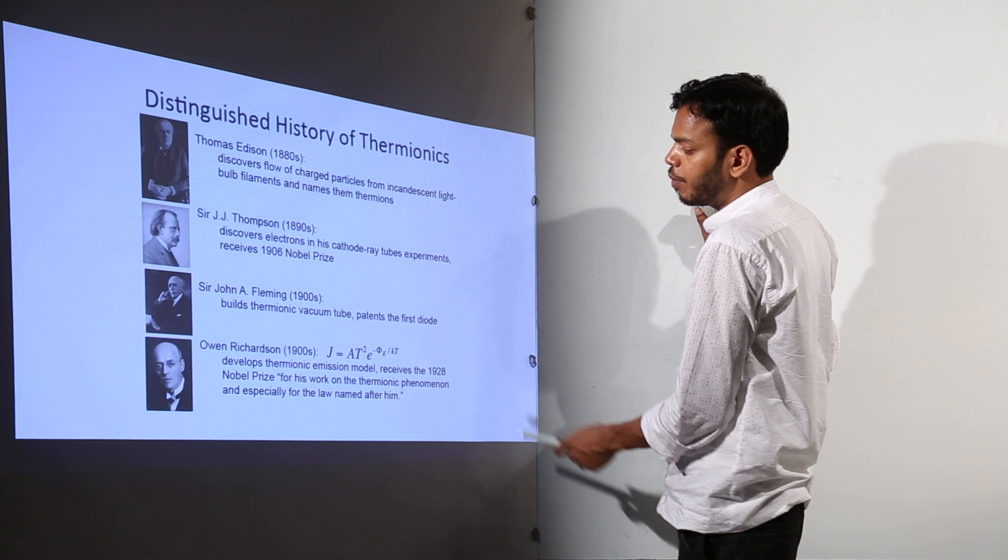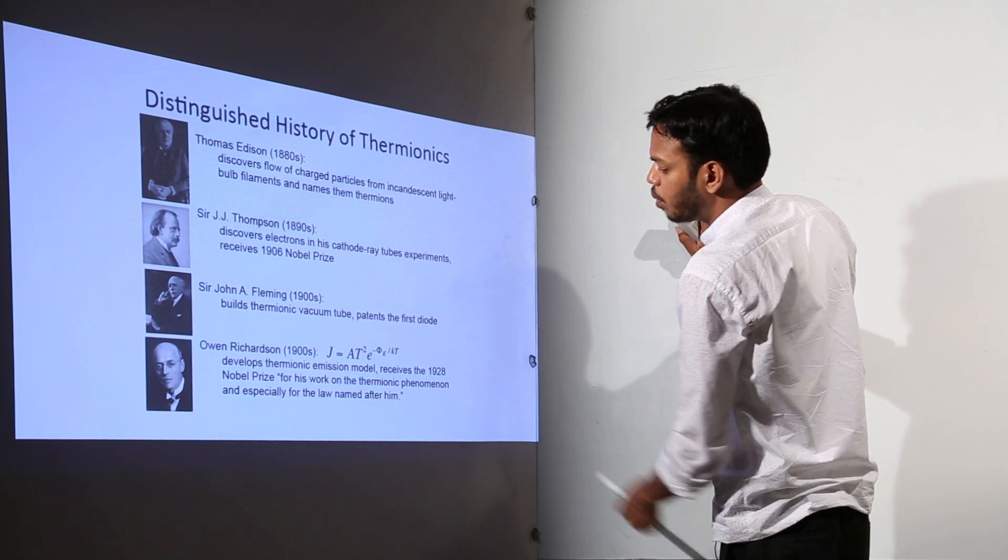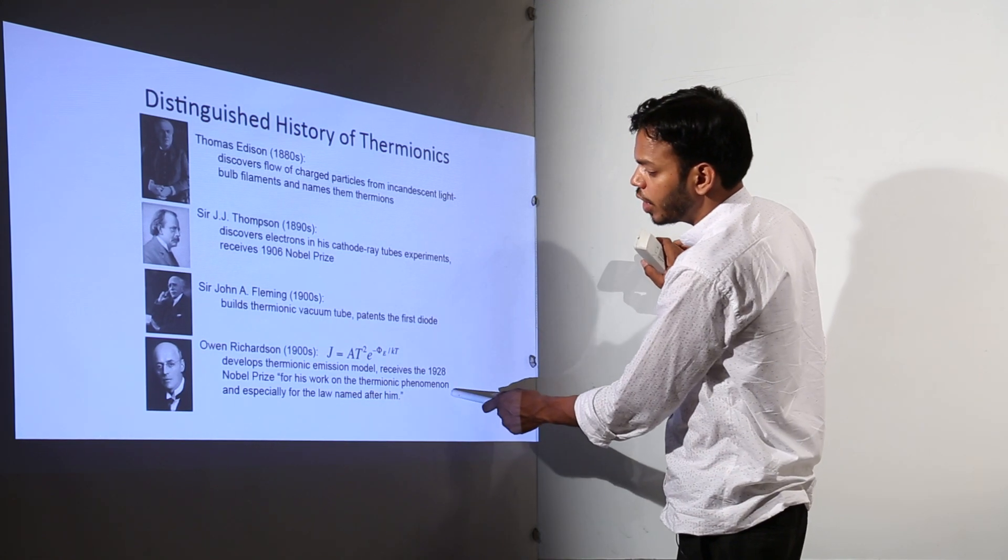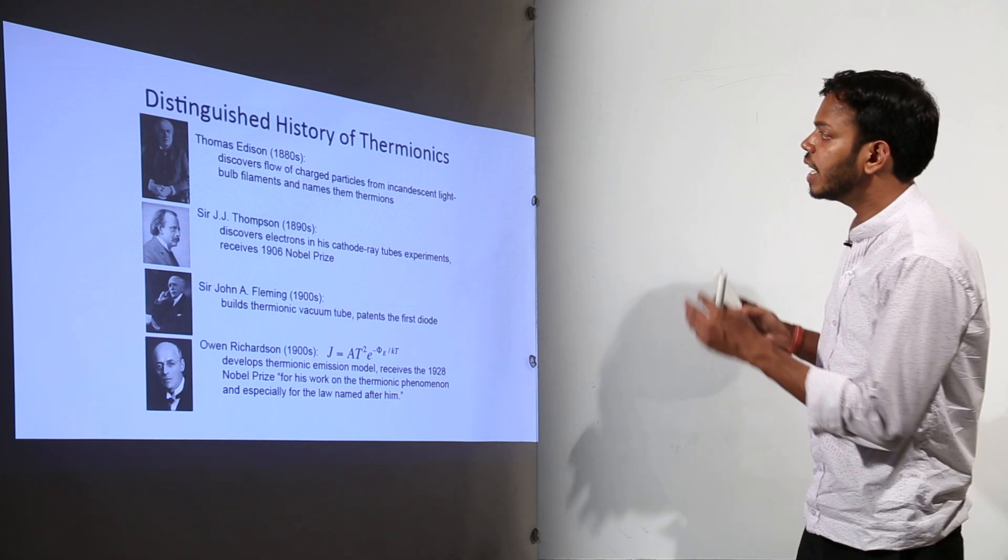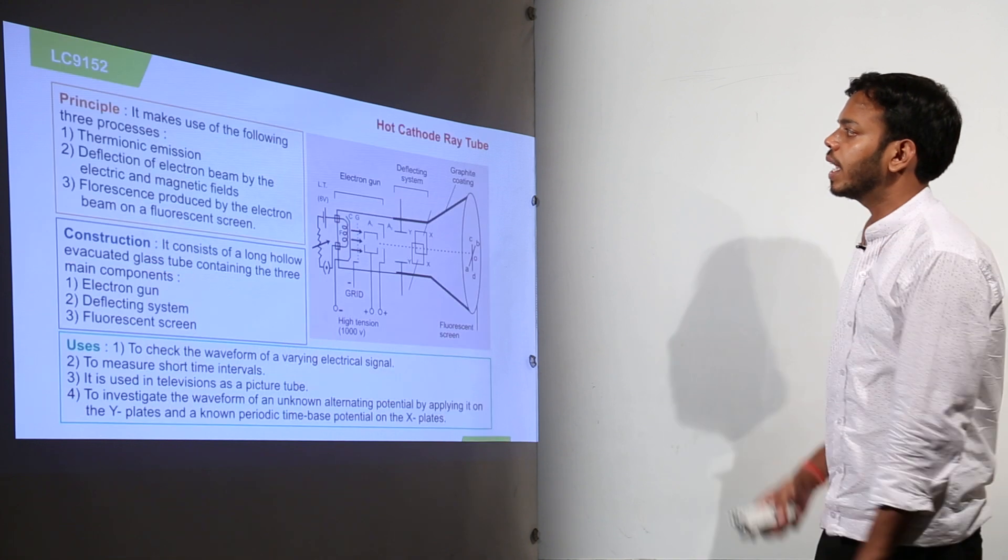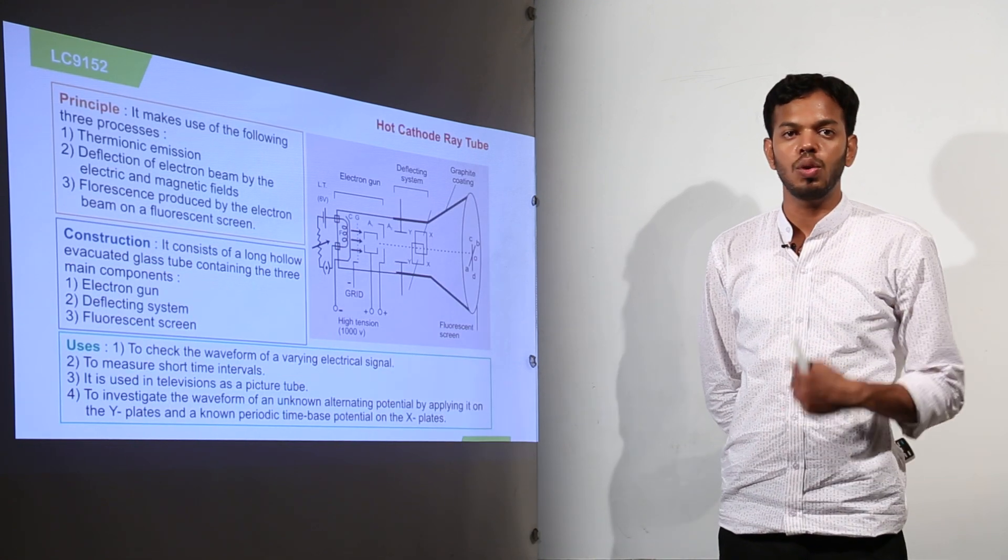Then later on the advancement was Sir Richardson. He developed thermionic emission model, receives 1928 Nobel Prize for his work on the thermionic phenomena and especially for the law named after him. These are few distinguished history of thermionics which you should definitely know. Now, this is hot cathode ray tube which we have to discuss.